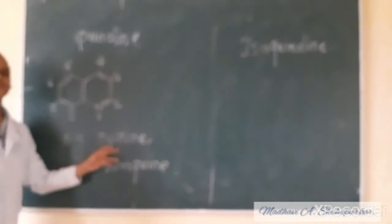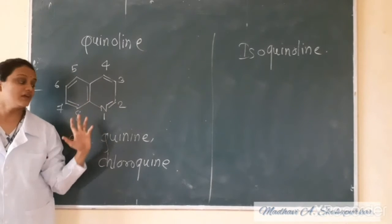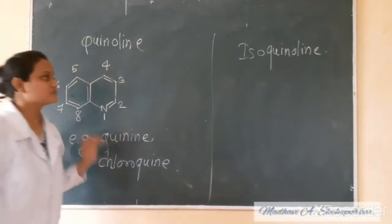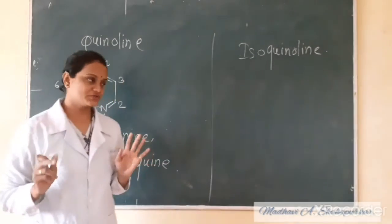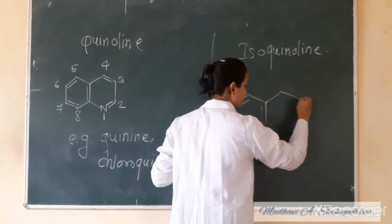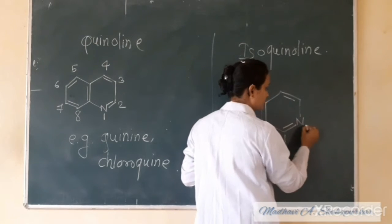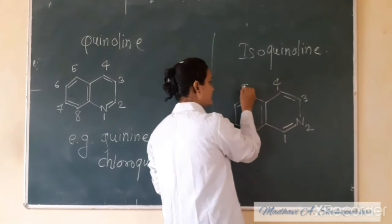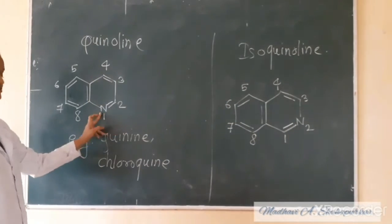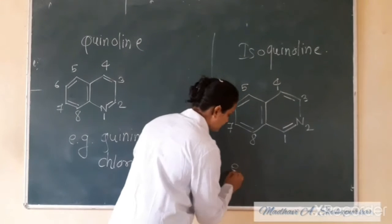We have to say that antimalarial drugs include chlorophyll in their structure. This is the structure of chlorophyll. Nitrogen is at the second position — same structure. Numbering is from here: 1, 2, 3, 4, 5, 6, 7, 8. Nitrogen is in the first position. Second position and the numbering — nitrogen in the first position.